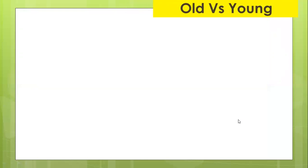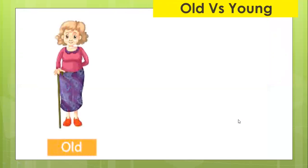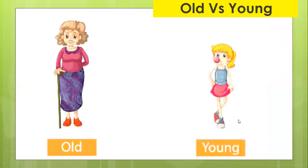Look at this. Old versus young. Look at her — is she young or old? She is old. And this girl is young. She looks so young. So we got old and young.